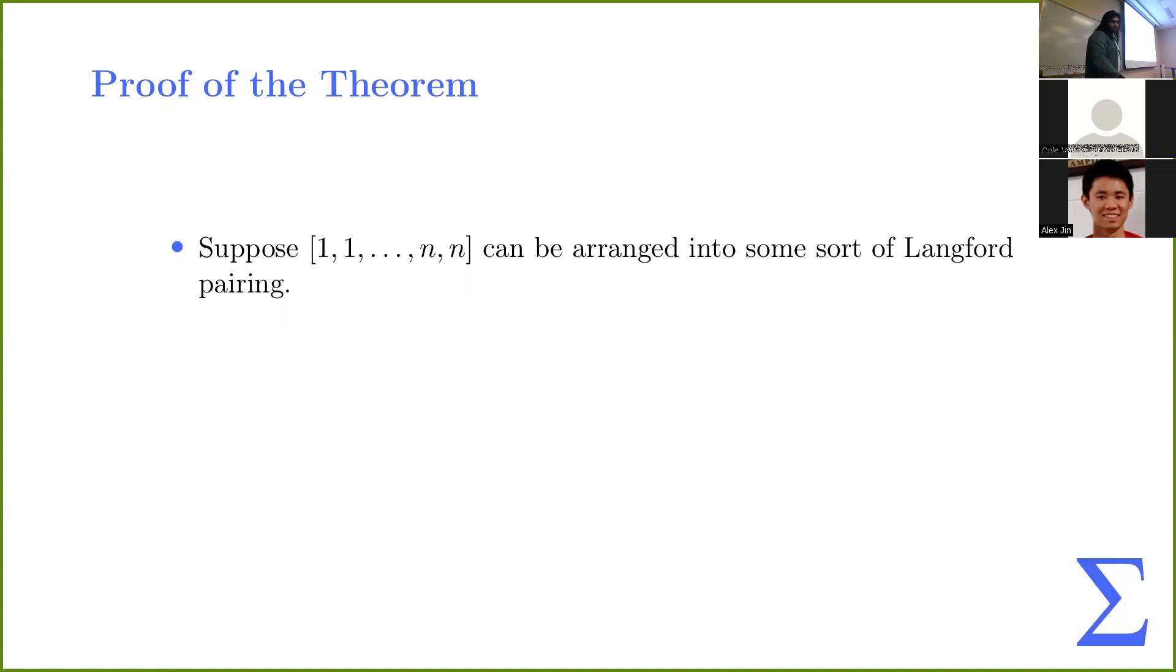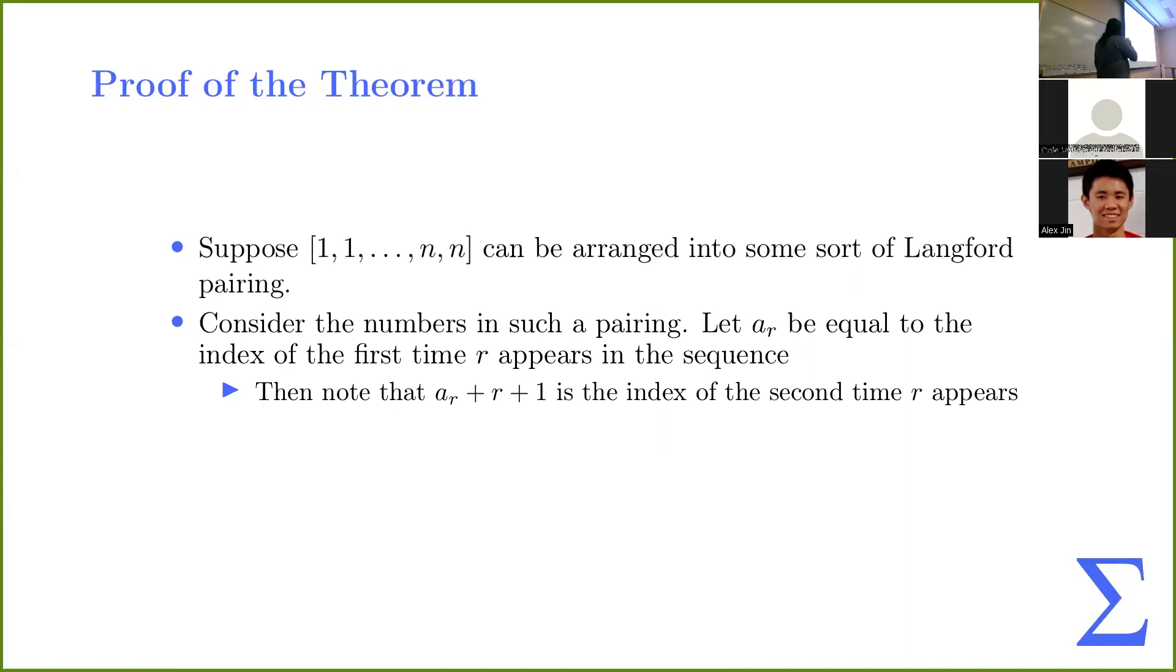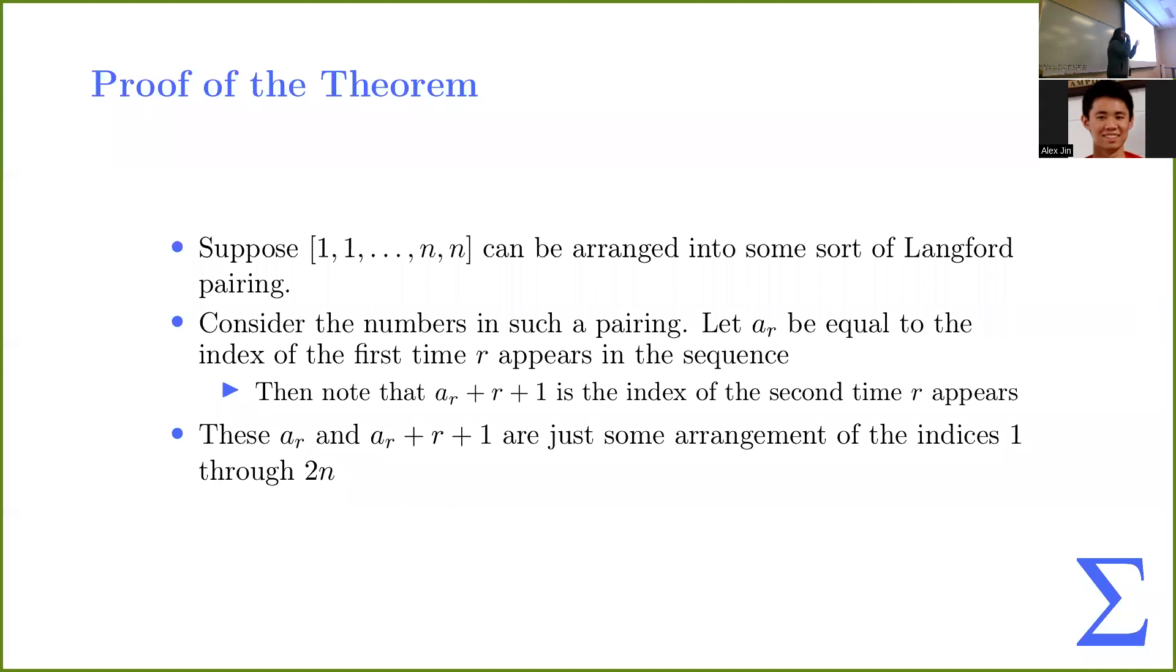So suppose we can arrange this into some sort of Langford pairing. So now consider the numbers in such a pairing. So let A of R be the first time R appears in the sequence. And then, since A of R is where the first time it appears, we want R numbers in between. And then the next number is going to be the second time R appears. So we're going to have A of R as the first index, and then A of R plus R plus one is going to be the second index. But we're just really permuting these indices around, right? We have a list of length 2n, and the indices go from 1 to 2n. And then the pairing is just some rearrangement of this.